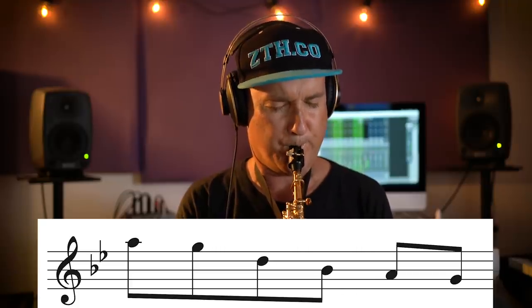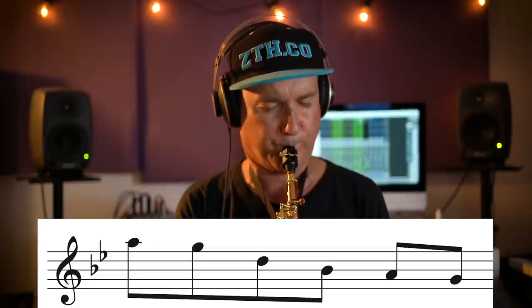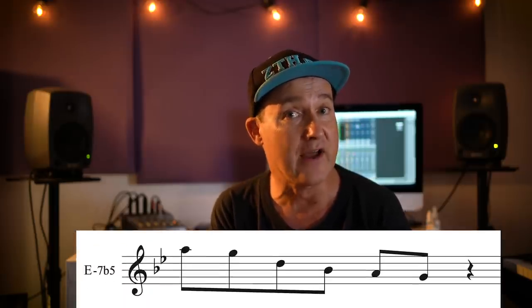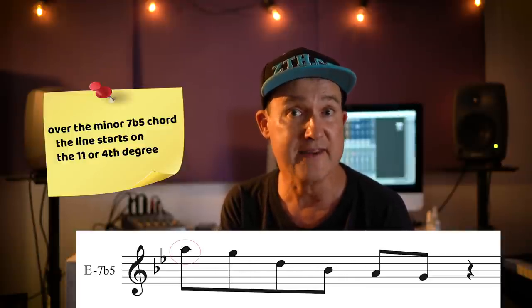These notes also sound amazing over E minor 7 flat 5. The function of these notes in relation to E minor 7 flat 5 gives us the 11th or the 4th, minor 3rd, minor 7th, flattened 5th, and the 4th to the minor 3rd. On this minor 7 flat 5, this melodic structure starts on the 11th or the 4th. Remember this for later.